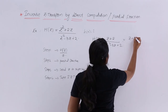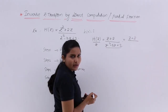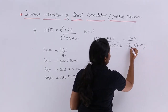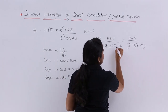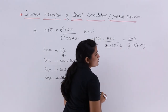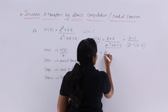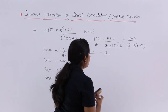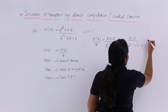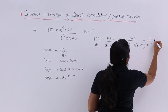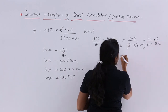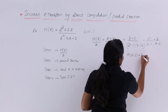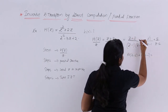The expression (z + 2) divided by (z² - 3z + 2) can be written with the denominator factored as (z - 1)(z - 2), since (z - 1)(z - 2) = z² - 3z + 2. Writing in partial fraction form: (z + 2) / [(z - 1)(z - 2)] = A/(z - 1) + B/(z - 2). This implies A(z - 2) + B(z - 1) = z + 2.